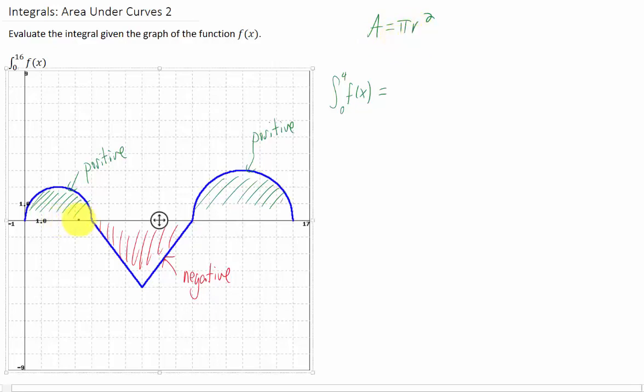The radius of this circle here appears to be 2, so the area of this semicircle is going to be pi times 2 squared divided by 2. Do just a little bit of simplification here, and we get the area of this semicircle is 2 pi.